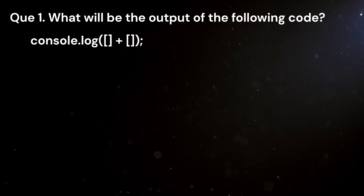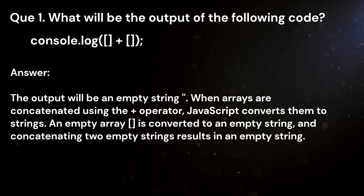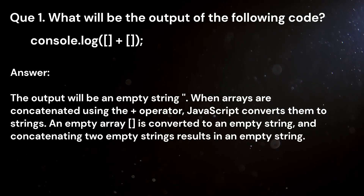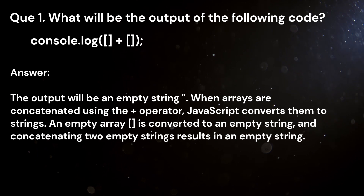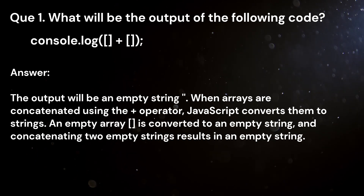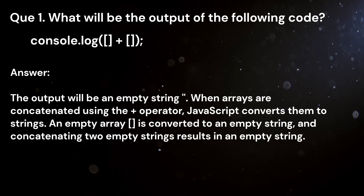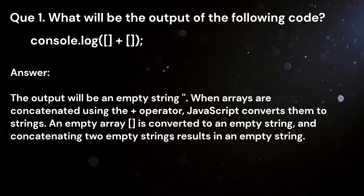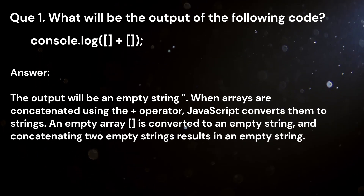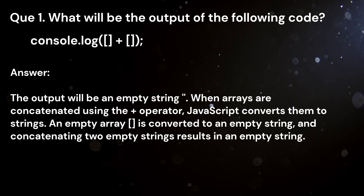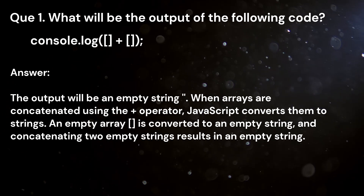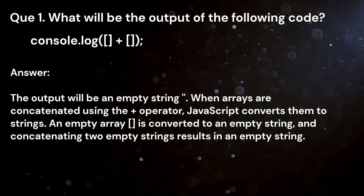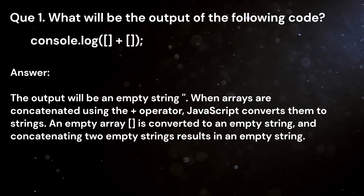Answer. The output will be an empty string. When arrays are concatenated using the plus operator, JavaScript converts them to strings. An empty array is converted to an empty string, and concatenating two empty strings results in an empty string.